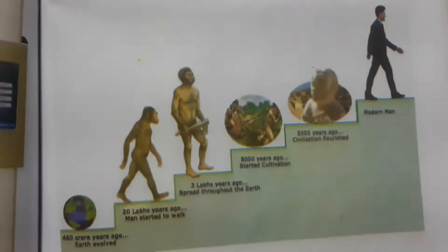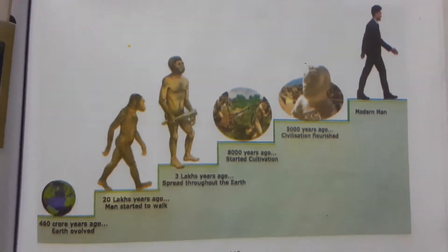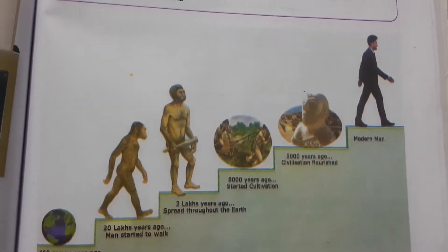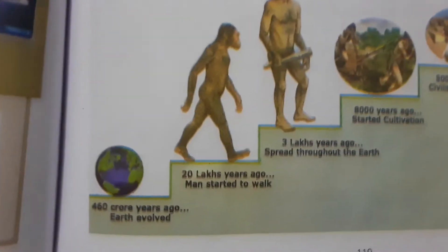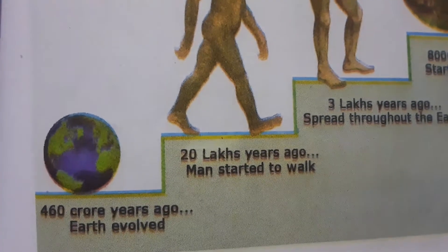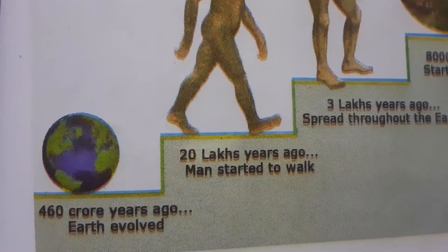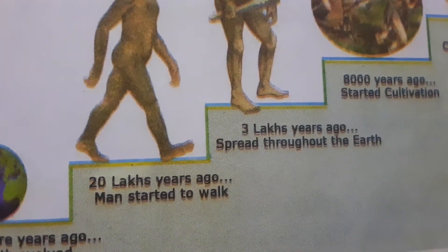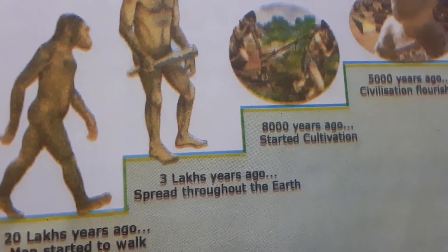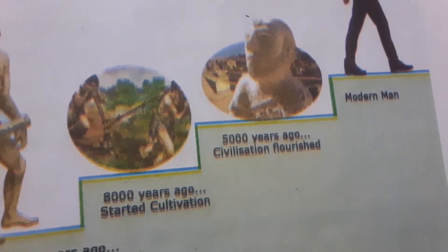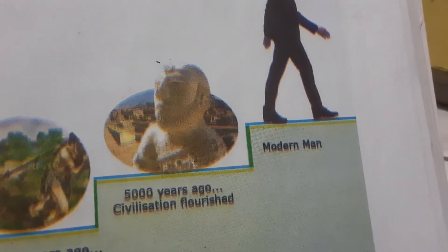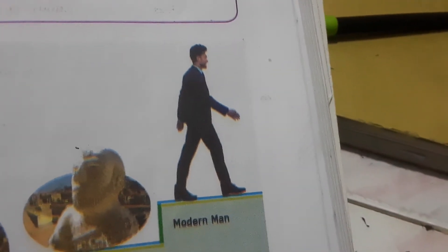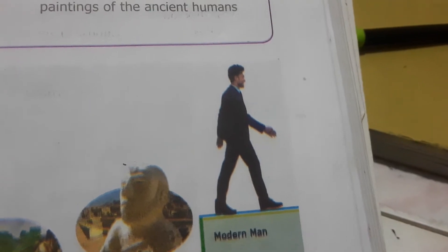So what is evolution? Evolution is nothing but the journey from the origin to the modern man. 460 crore years ago Earth evolved, 20 lakh years ago man started to walk, 3 lakh years ago spread throughout the Earth, 8000 years ago started cultivation, 5000 years ago civilization flourished, and now we are the modern man.